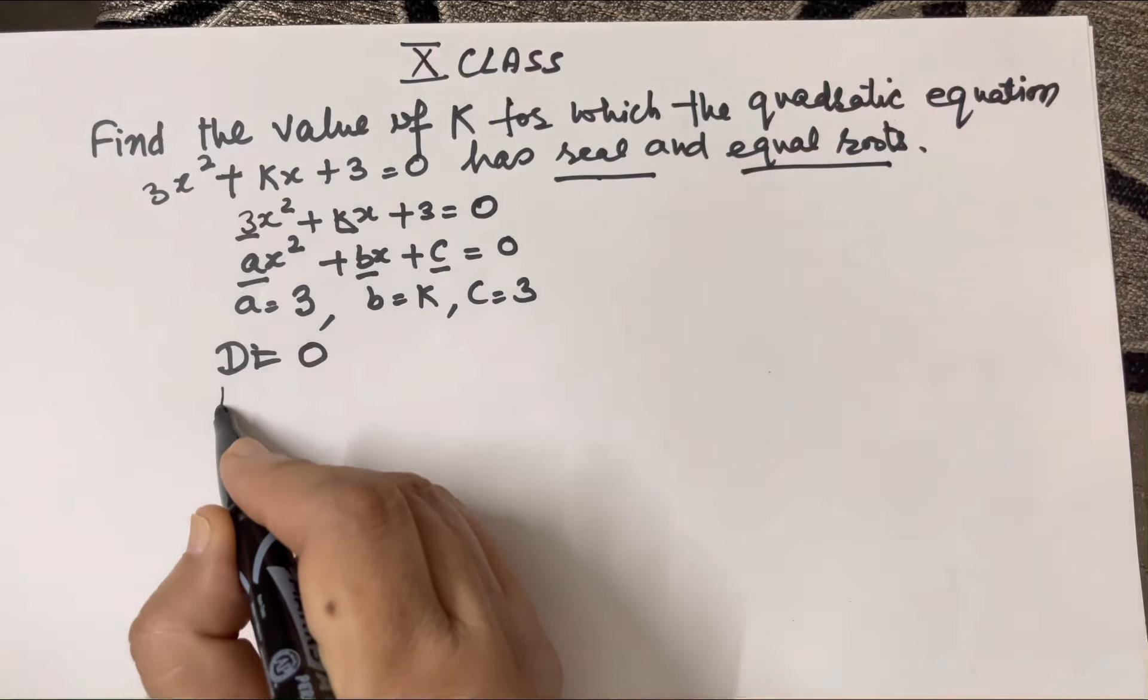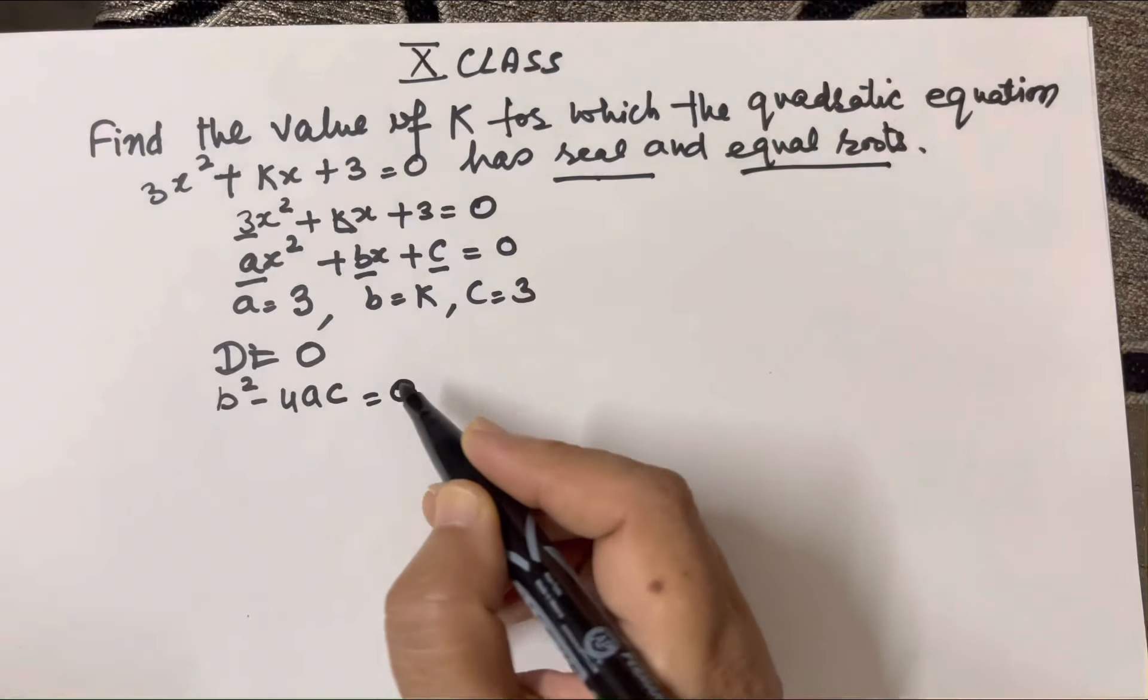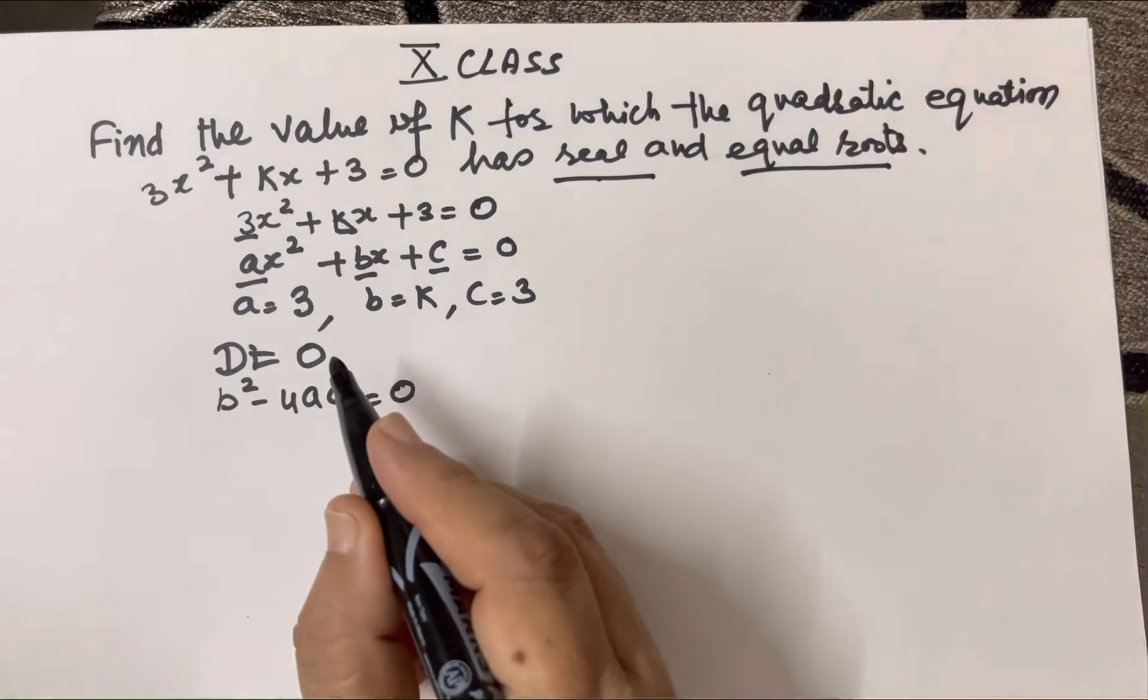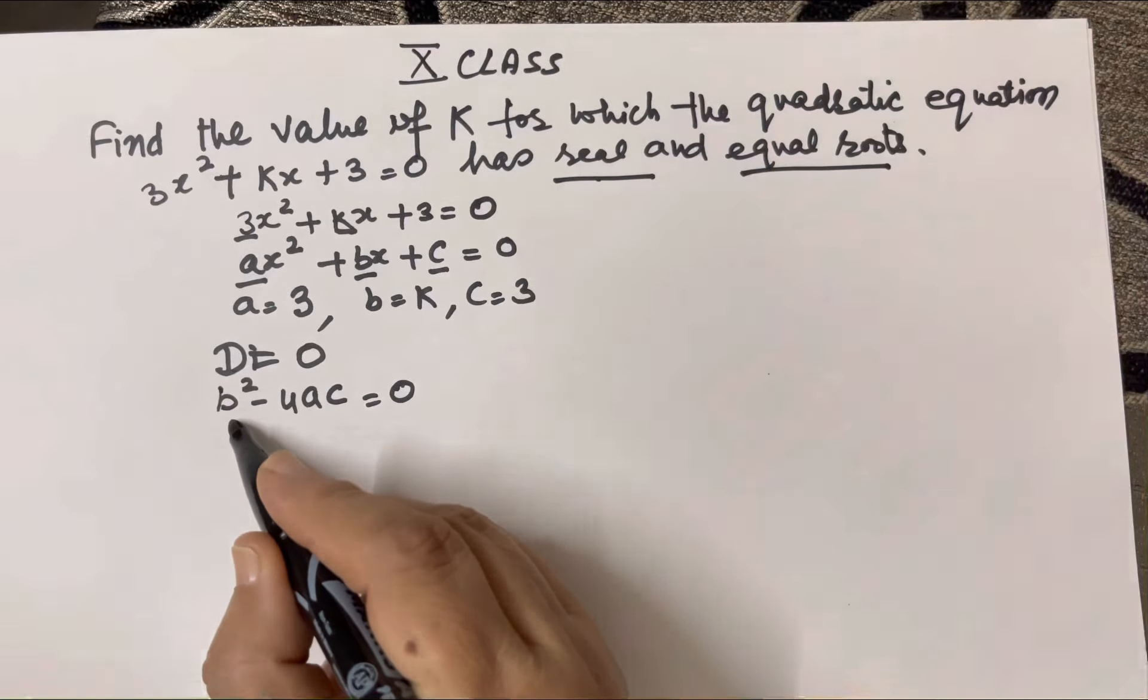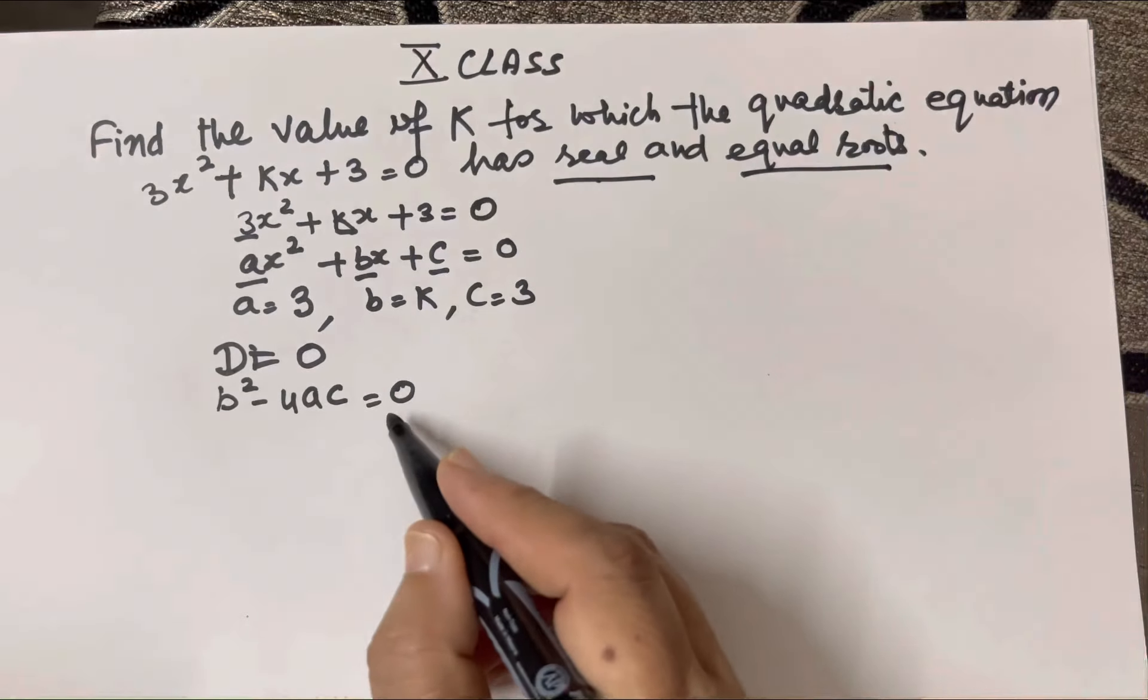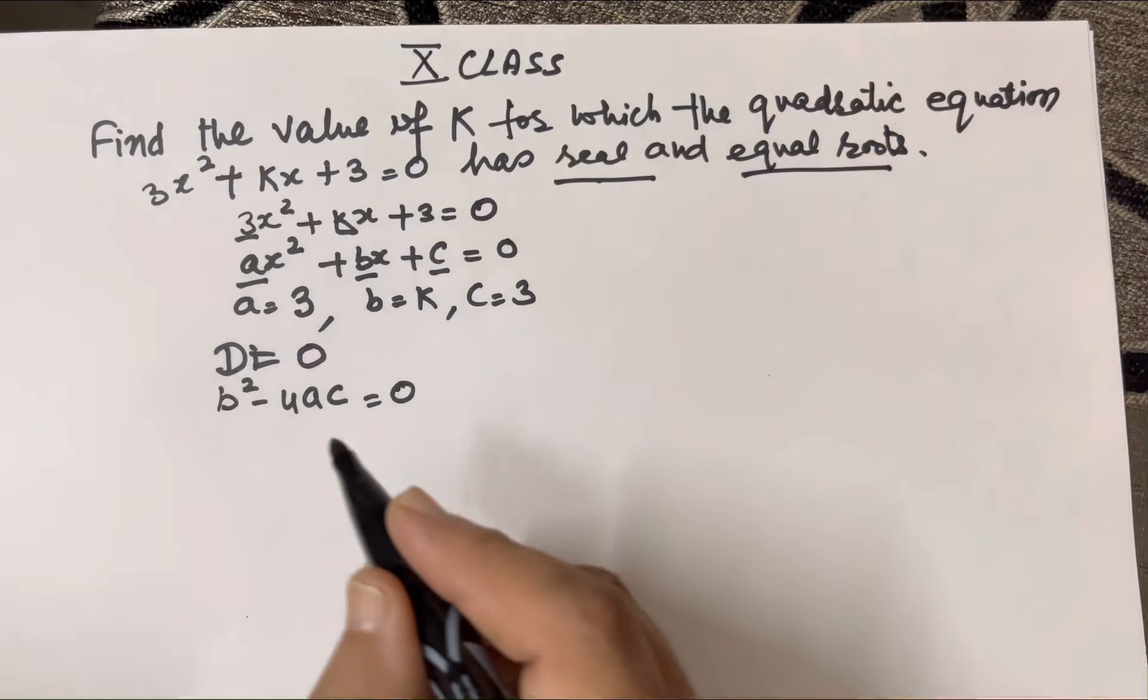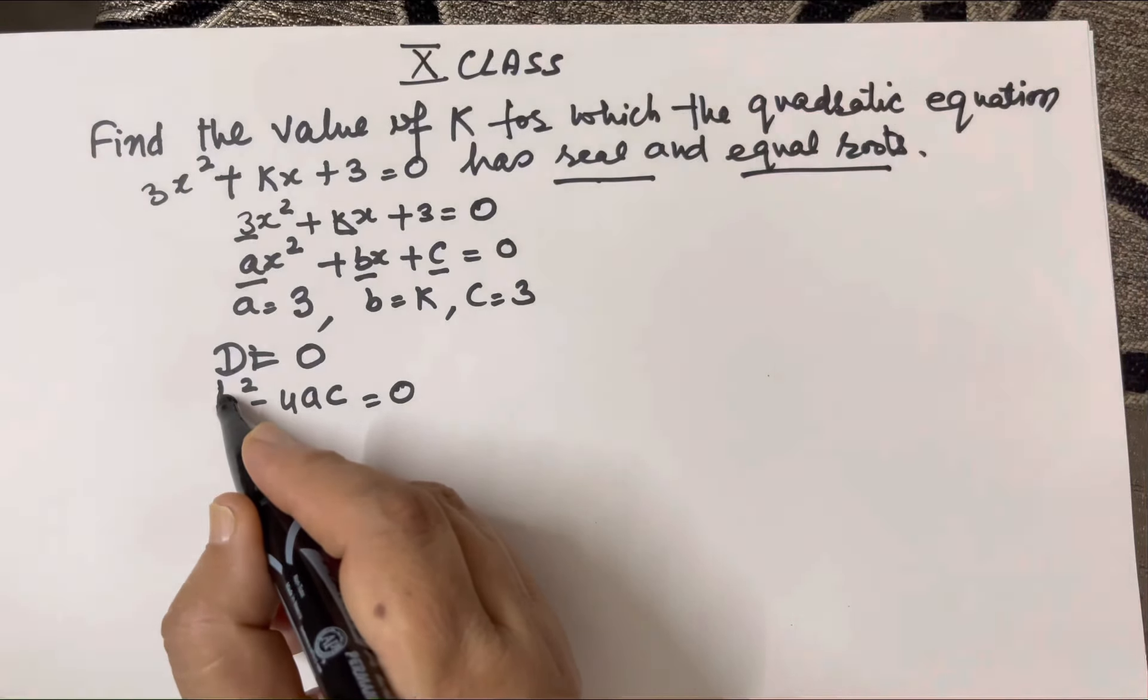So we will write b² - 4ac = 0, because discriminant equals b² - 4ac. If D equals 0, then b² - 4ac equals 0. Now we will put the values.